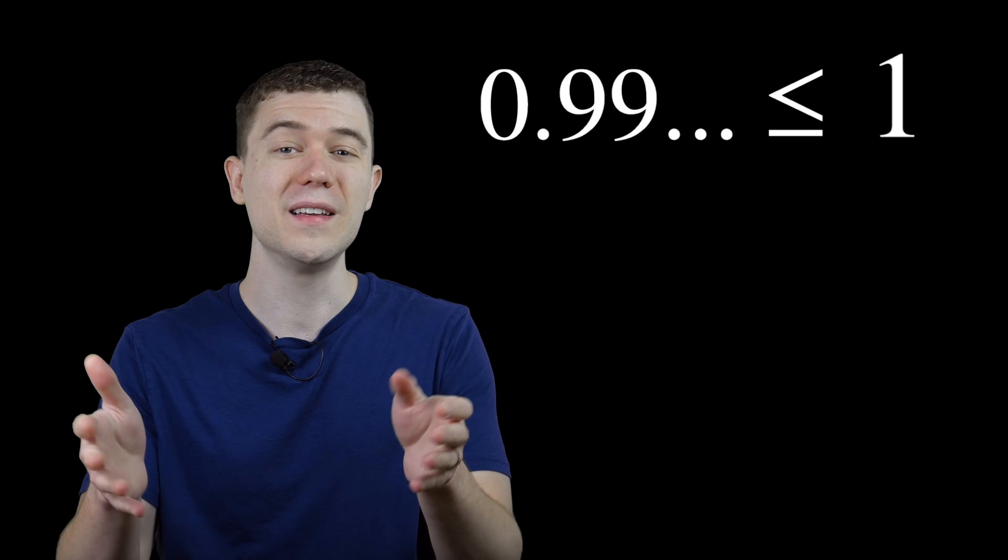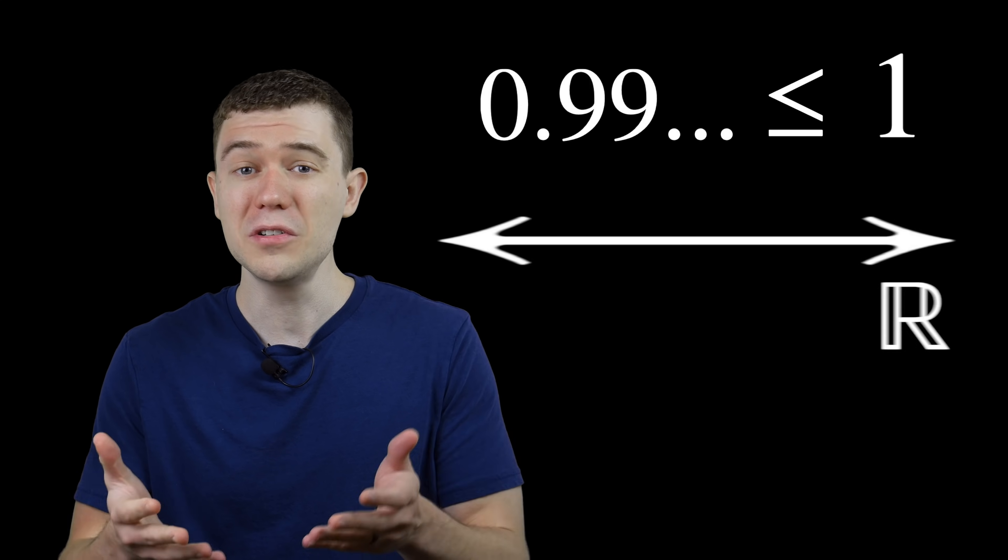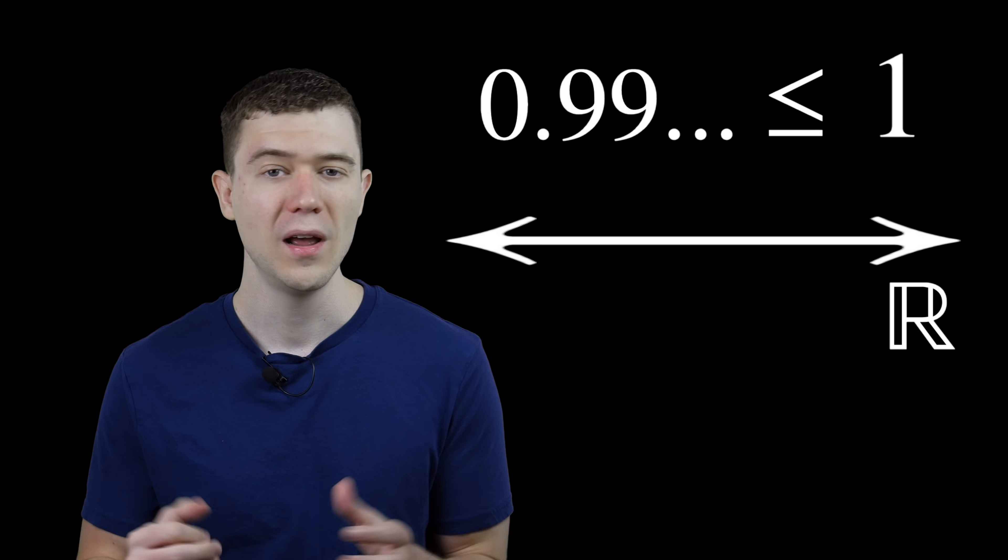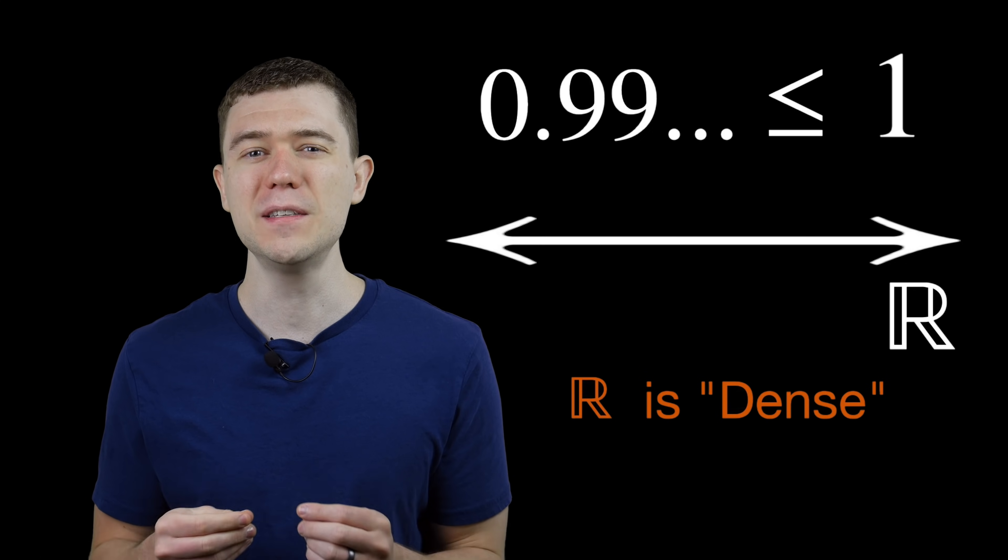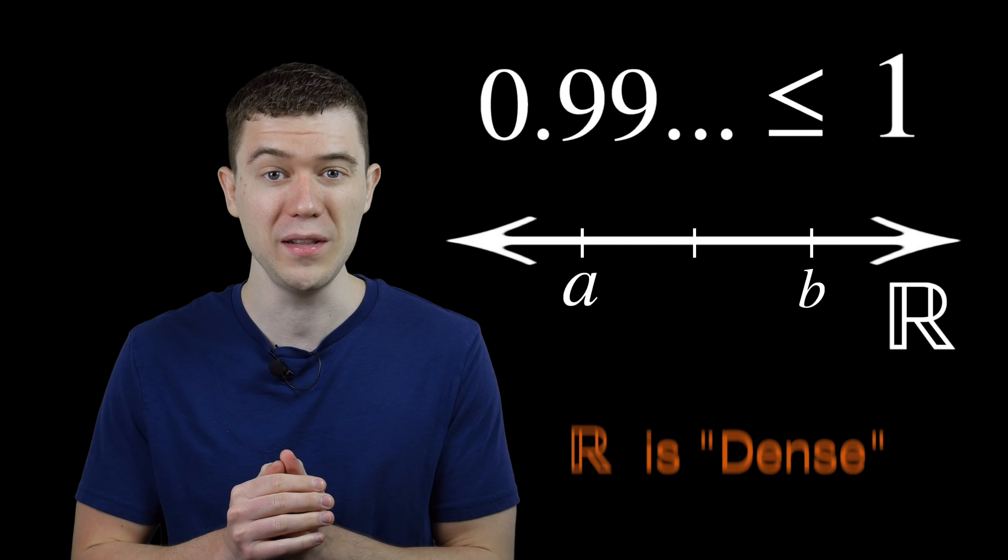If 0.9 repeating is a real number, then it has to play by the rules of the real number system. And the real numbers are continuous. There are no breaks or gaps in the real number line. A mathematician might call the real numbers dense. That means between any two distinct real numbers, we can find another real number between them.